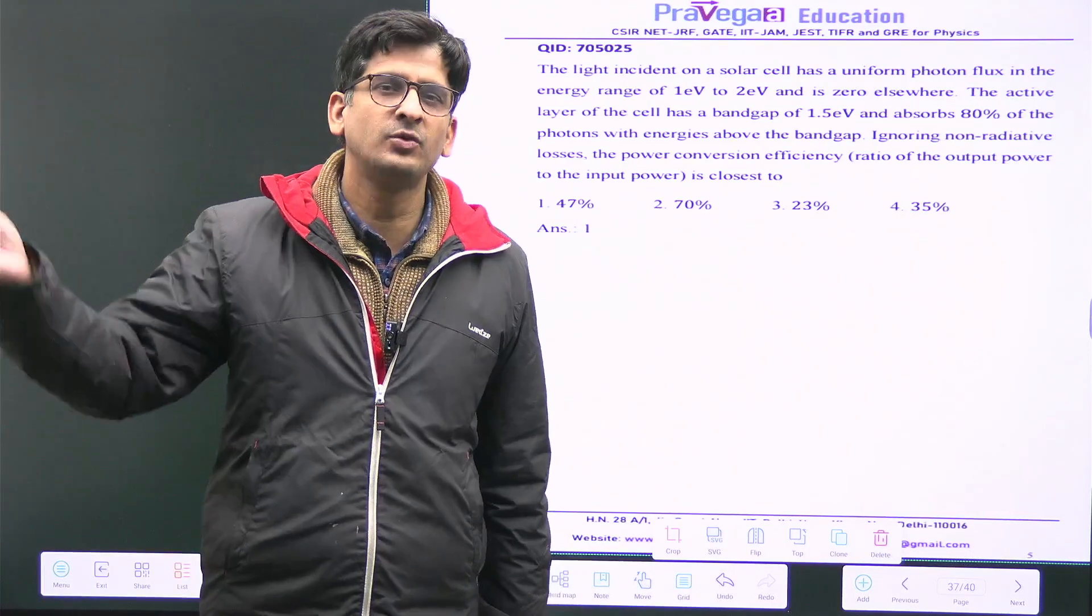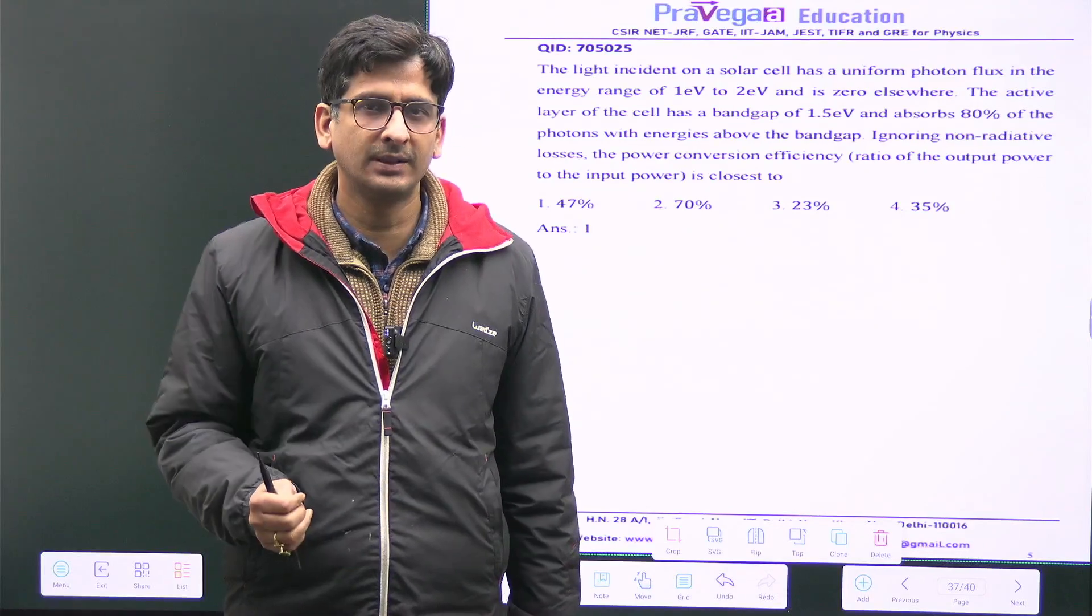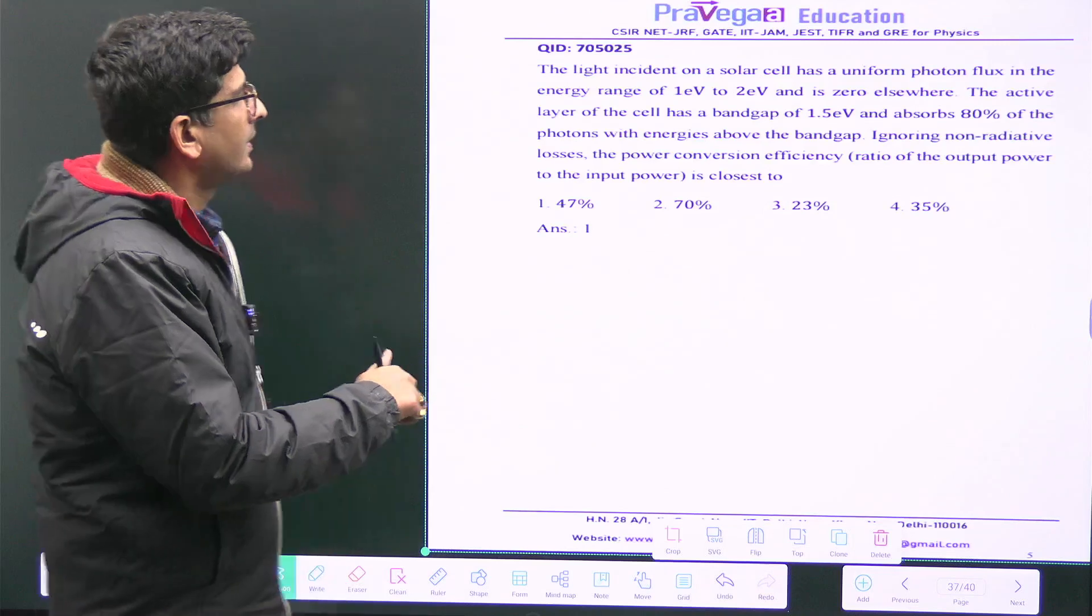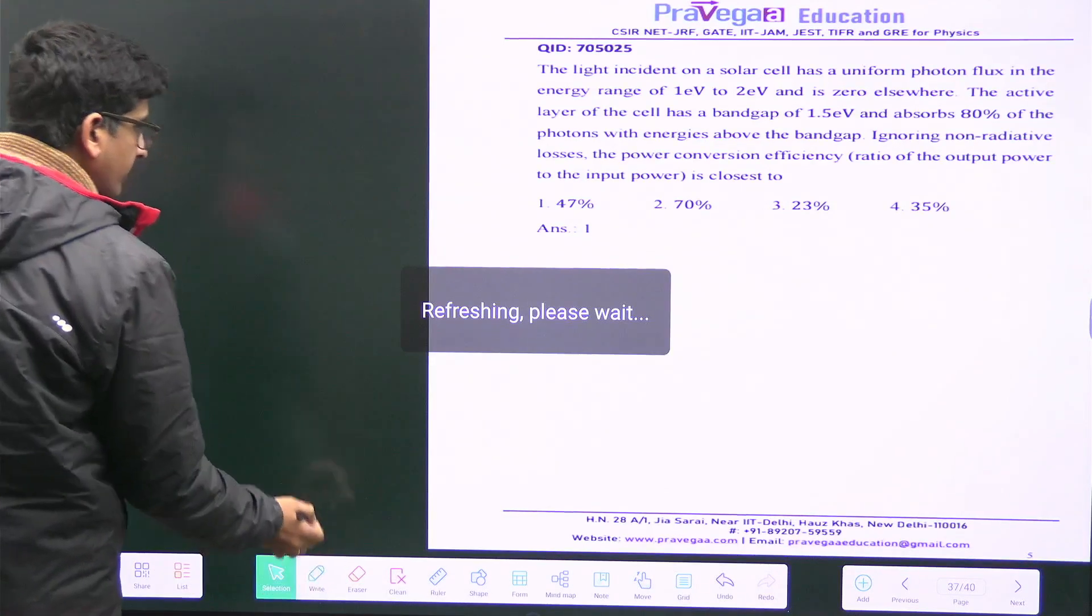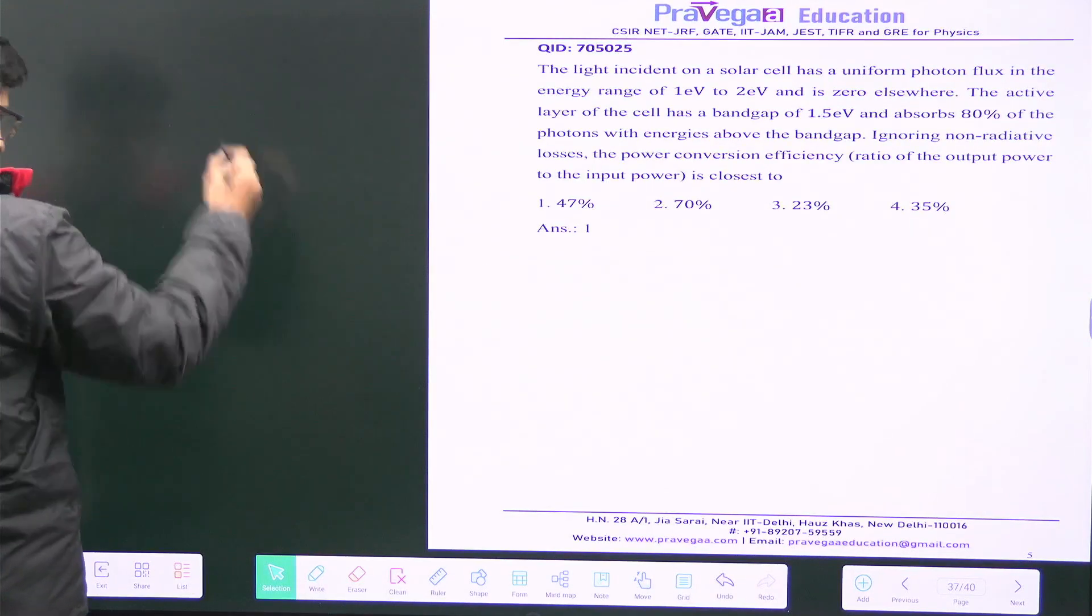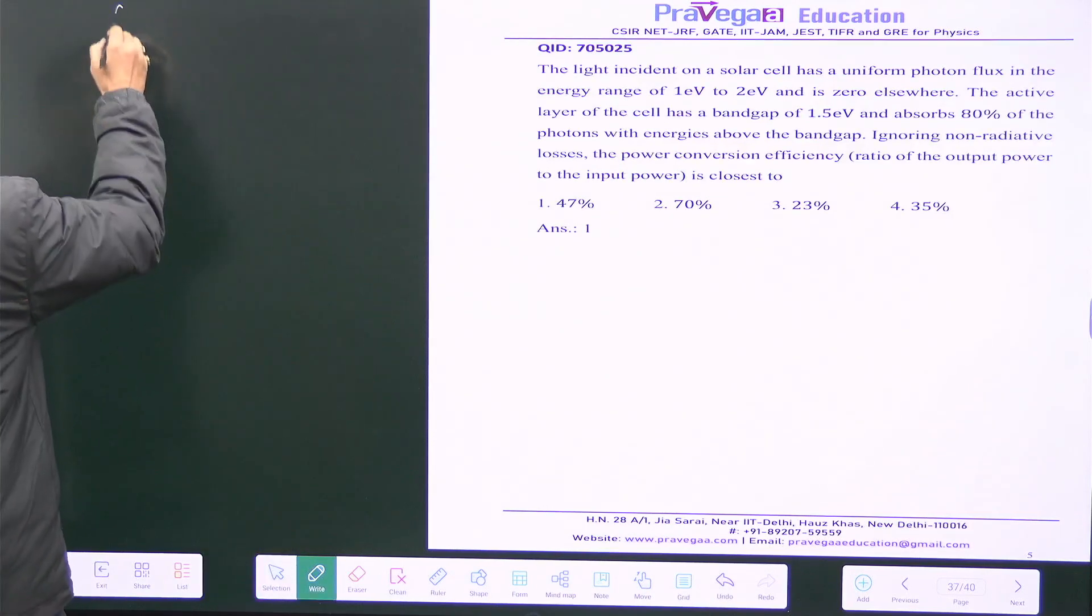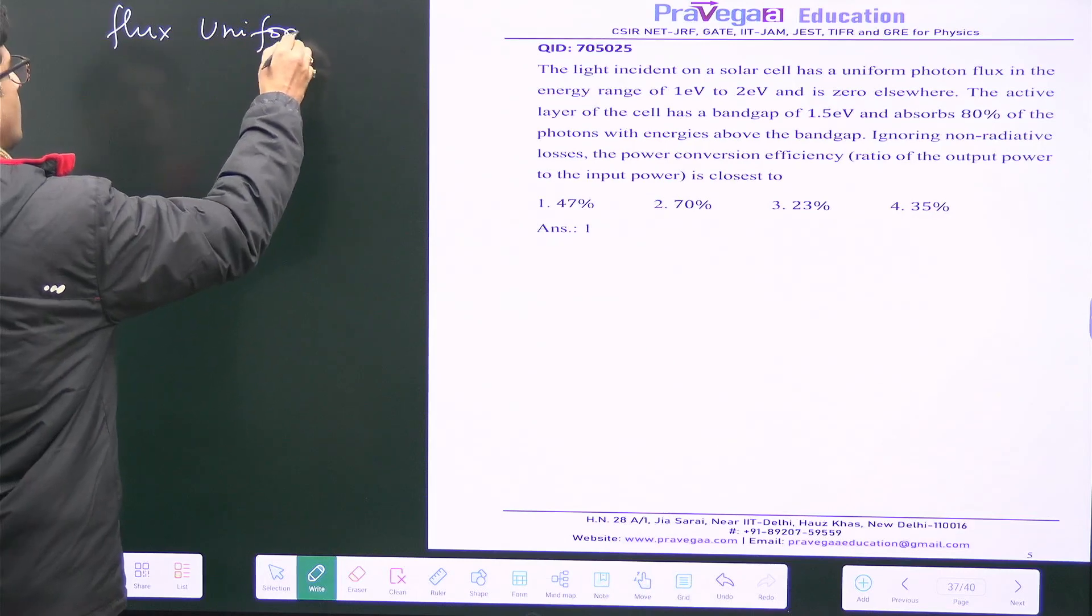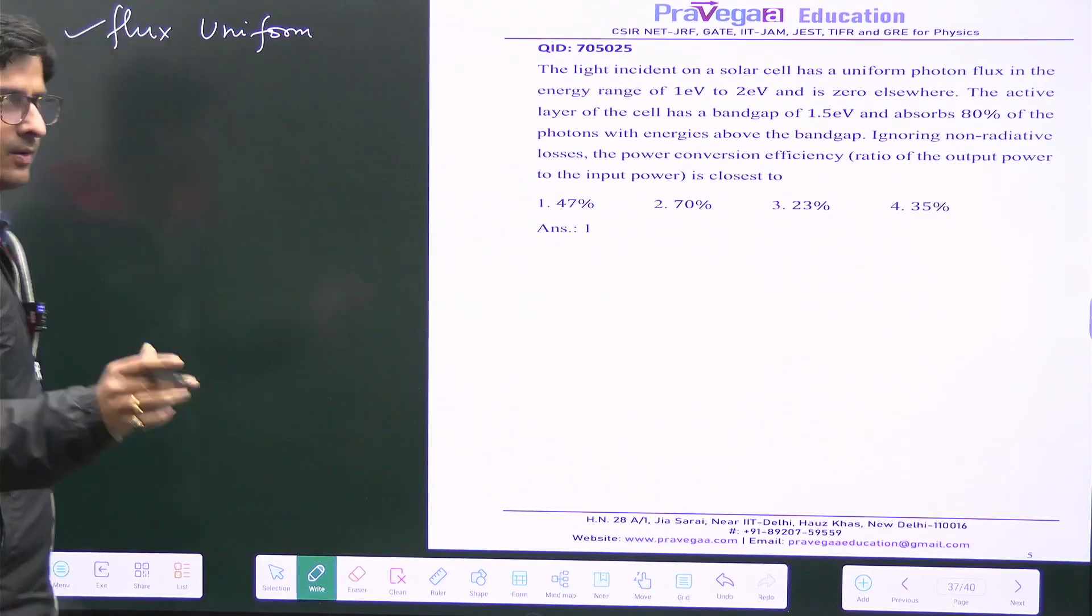Photon flux is uniform, so no probability distribution will be required. It is uniform flux and the photon that is coming is having an energy range of one electron volt to two electron volt.